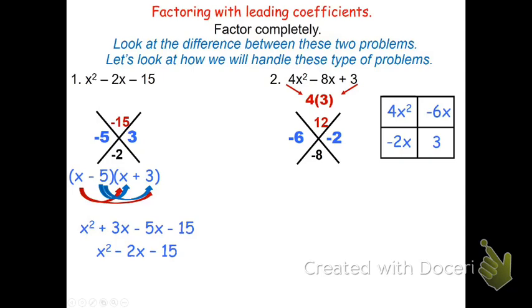The negative 8x is spread over the two boxes using negative 6x and negative 2x. Now I'll look at 4x squared and minus 6x and find the greatest common factor — the biggest thing that goes into both would be 2x. I'll write that 2x in front. Now I'll find the dimensions of the boxes. 2x times 2x gives me 4x squared, and 2x times negative 3 gives me negative 6x. Along the bottom, 2x times negative 1 gives me negative 2x. Checking my work: negative 1 times negative 3 is 3, which confirms the bottom right corner. So the factored form is the quantity 2x minus 3 times the quantity 2x minus 1.